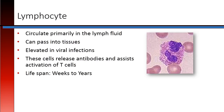Lymphocytes circulate primarily in the lymph fluid; however, they can pass out of the lymph system and into the tissues. Lymphocytes become elevated in viral infections. These cells release antibodies and assist in the activation of T cells, which are helper cells. The lifespan of a lymphocyte is weeks to years.